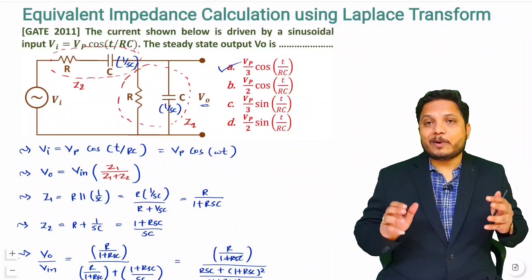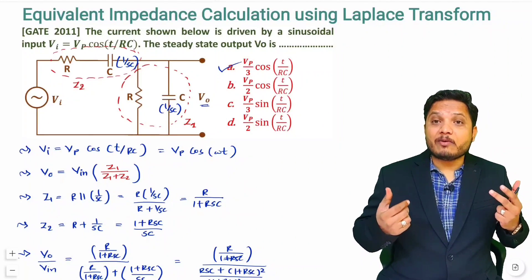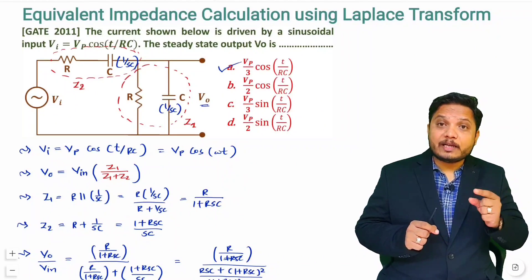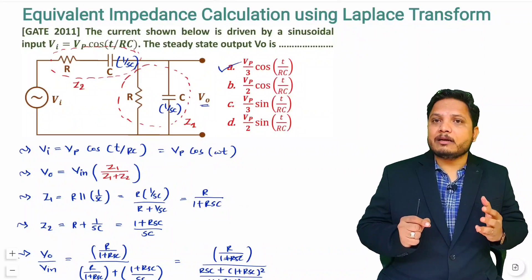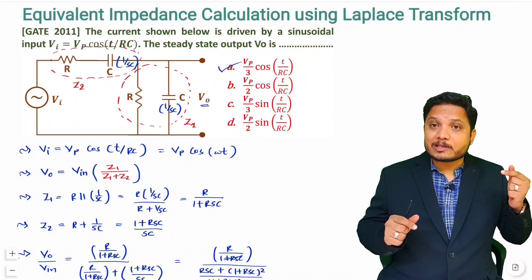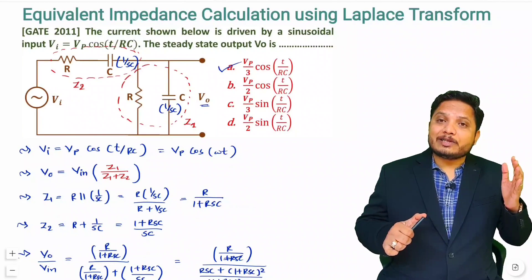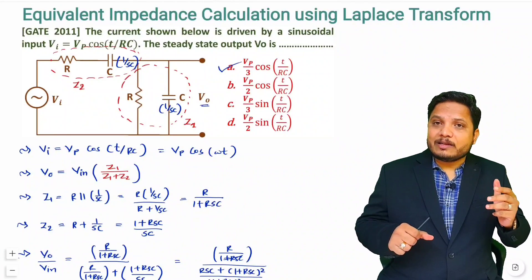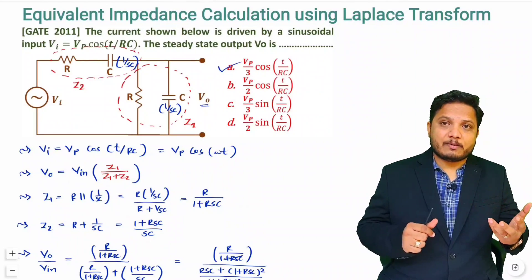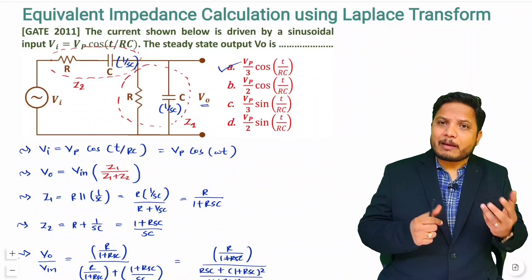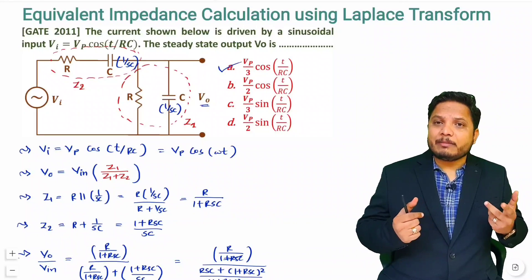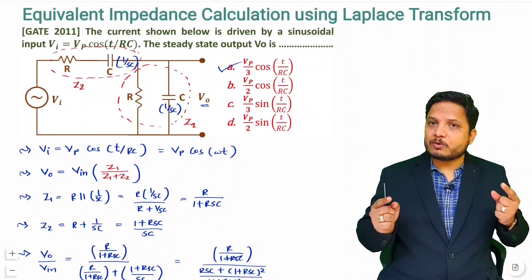That is how very interesting questions may come based on equivalent impedance. You should know the concept of equivalent impedance using Laplace, as it helps solve many problems. It is useful in analog electronics, signal and system, transient calculation in network theory, and impedance calculation in other areas. Whenever applications arise, I will explain them with examples. There are many applications of Laplace. I hope you have understood this. Thank you so much for watching.